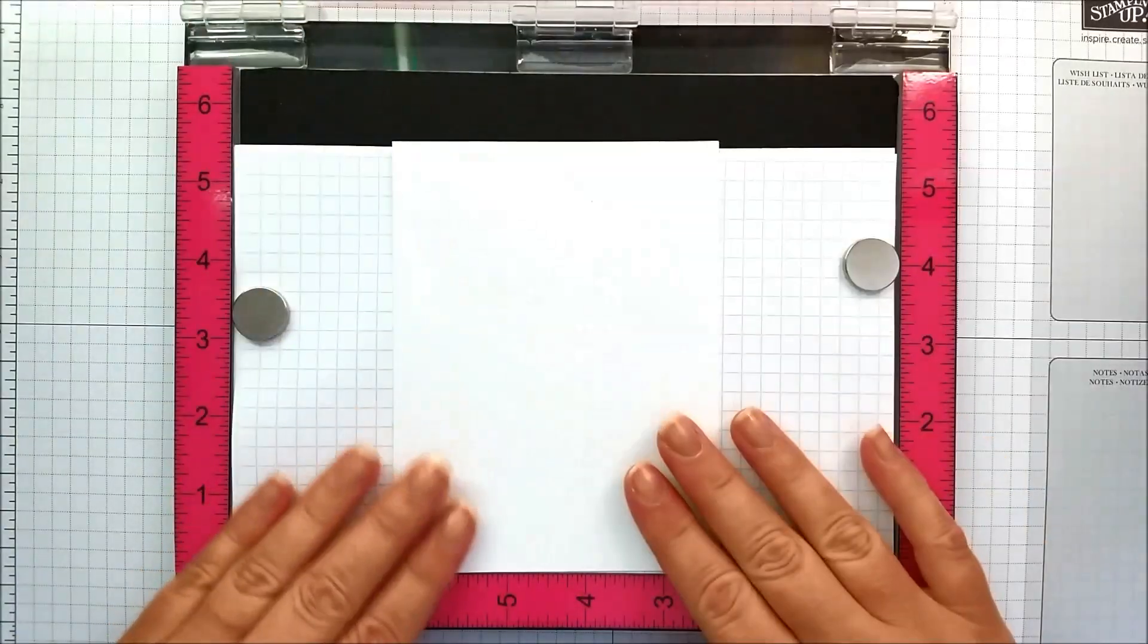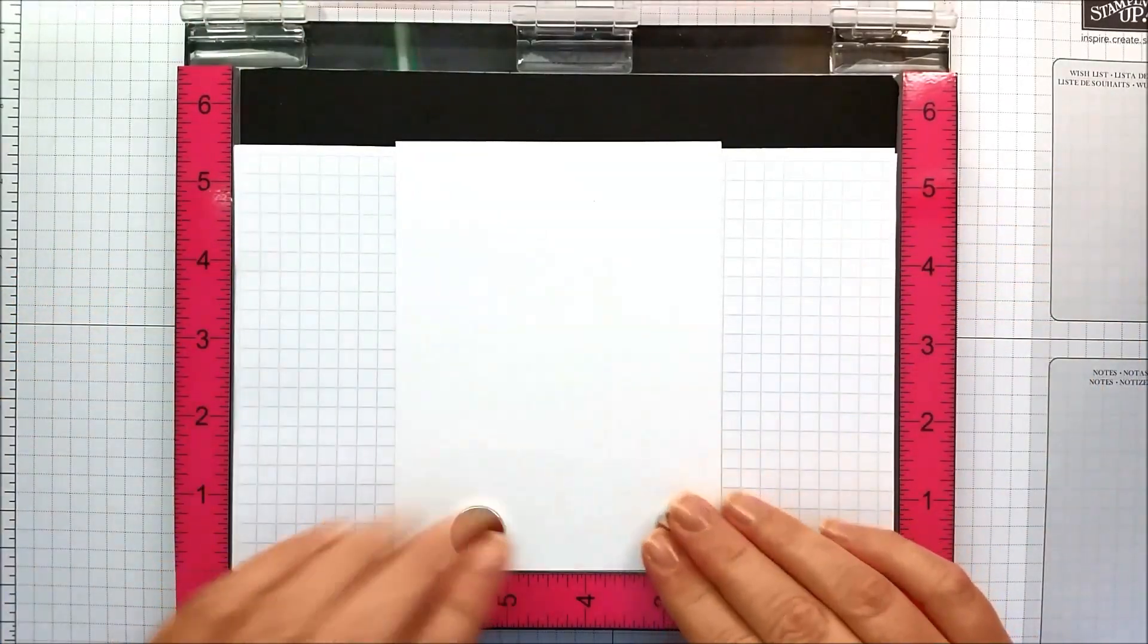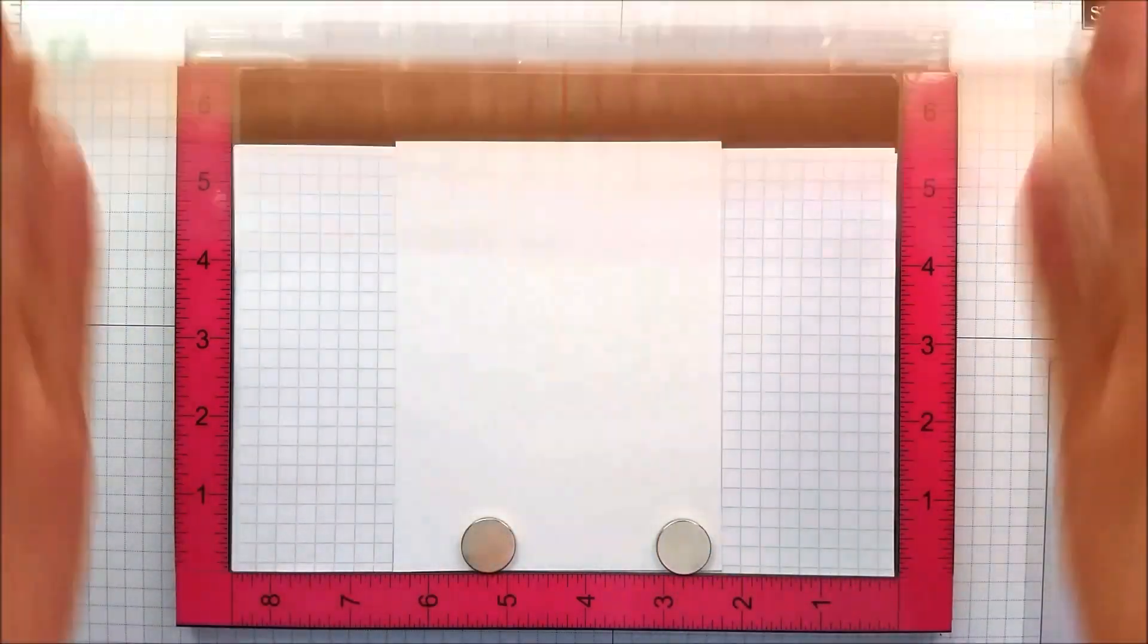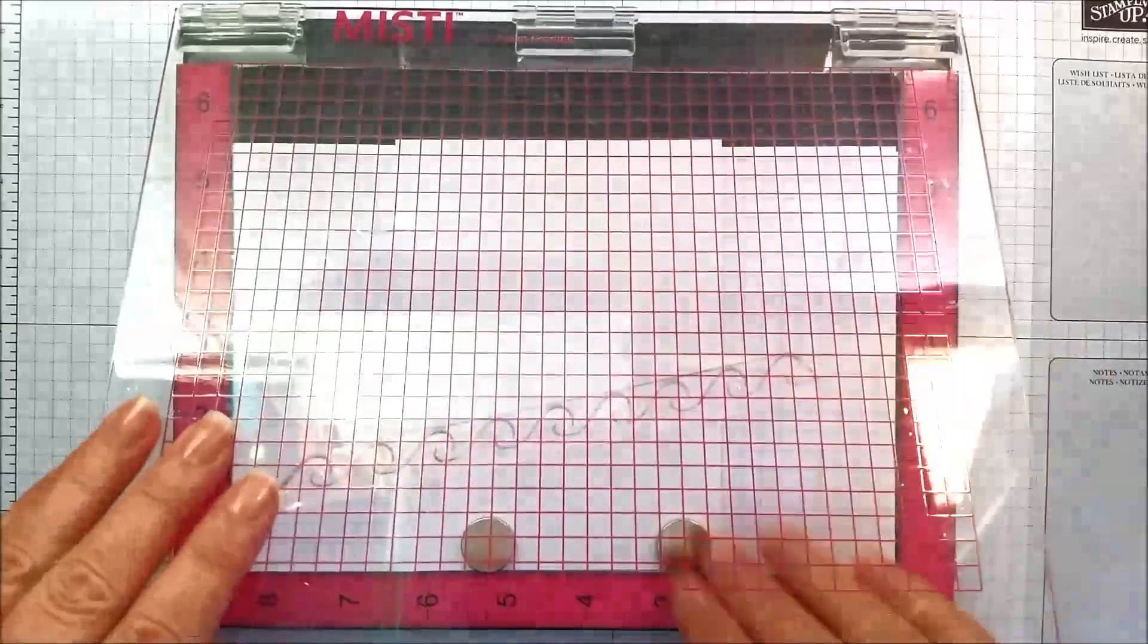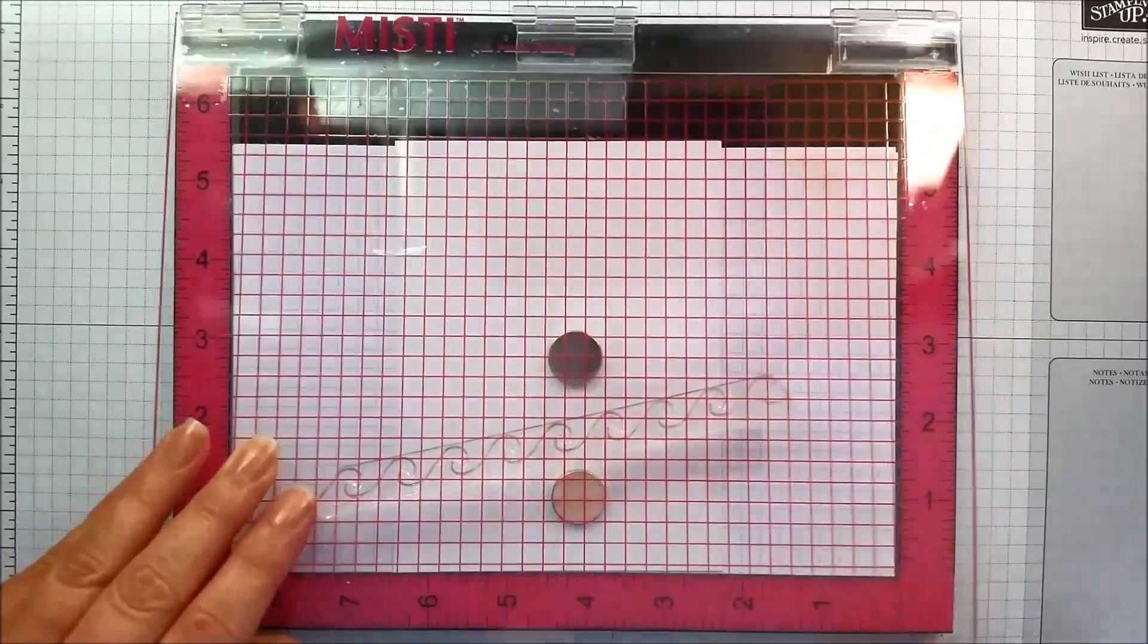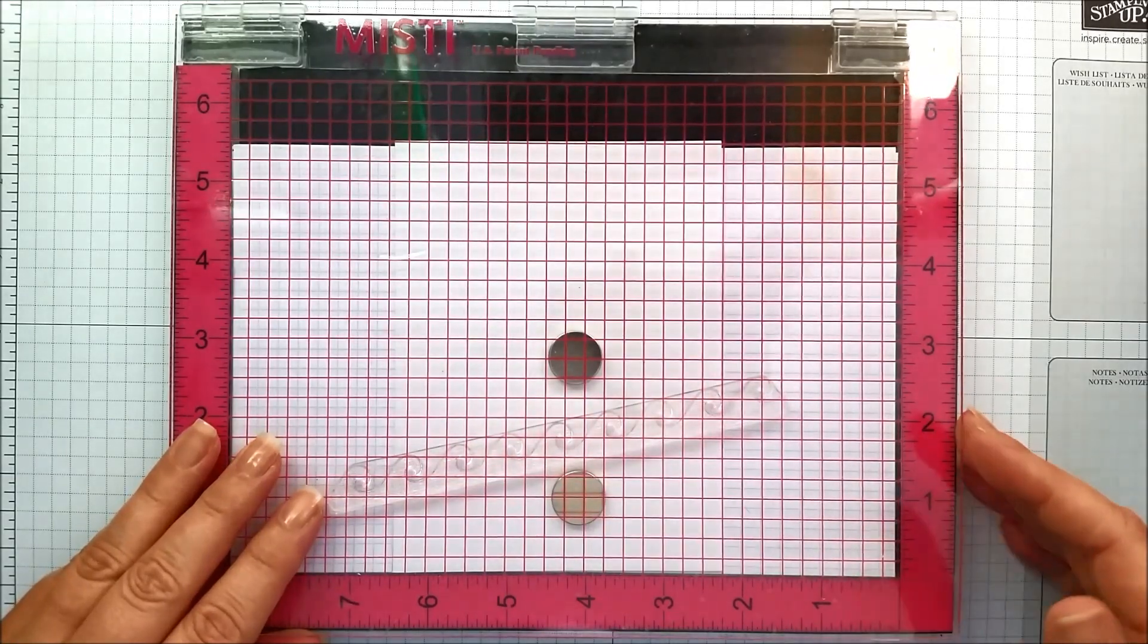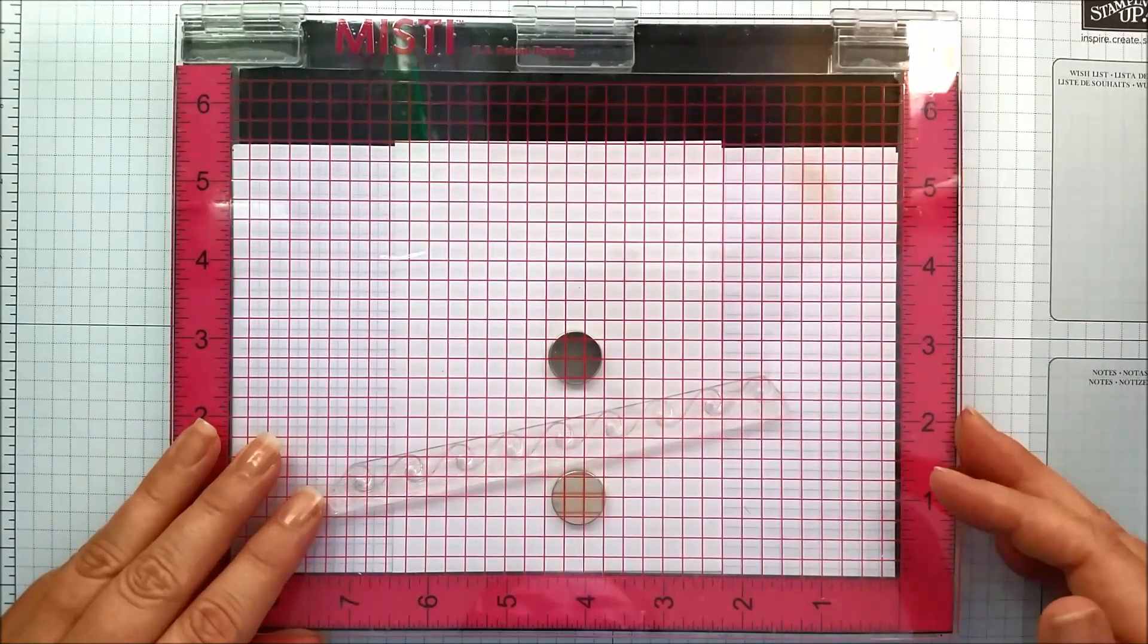I forgot the most important part - let's put some magnets down to hold our project in place. I'm going to make sure my magnets aren't in the way. I like them on both sides of my stamp just to hold that cardstock in position.